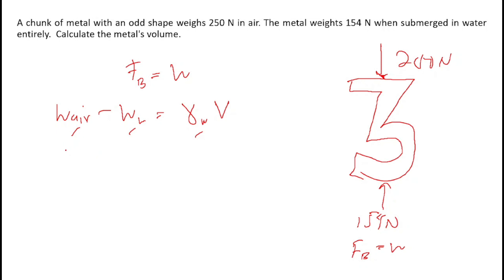The weight in air which is 250 N minus the weight in water which is 154 N equals to 9,810 N per cubic meter times the volume.